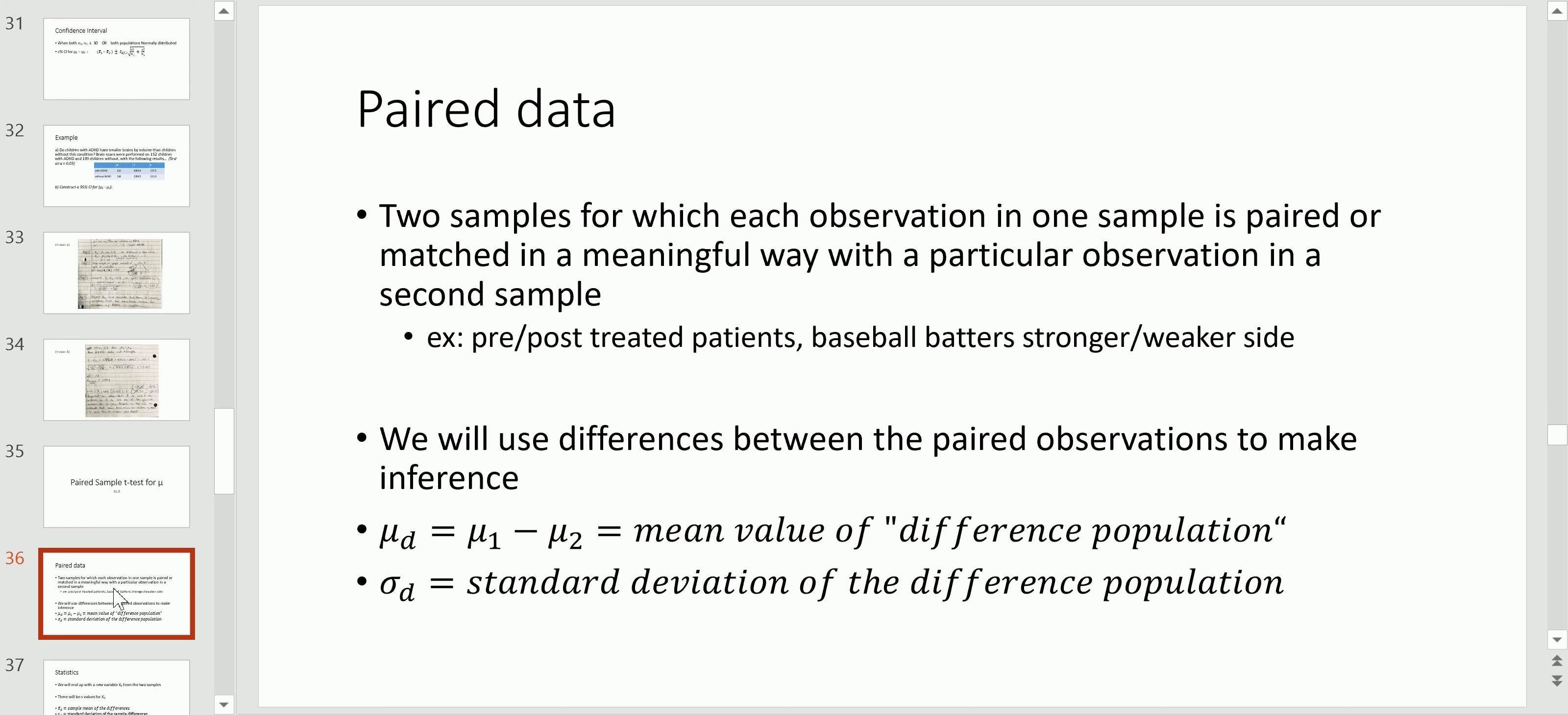So let's take a look at some of the fundamental concepts here. You have two samples, one from each population. In each of these samples we're going to have an observation that's going to be paired or matched in some meaningful way to an observation in the second sample.